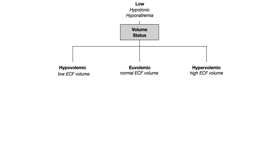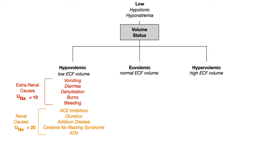Now we're looking at hypotonic hyponatremia by volume status. Starting on the left with hypovolemic — low extracellular fluid volume — there are many causes. Vomiting, diarrhea, dehydration, burns, and bleeding are all extra-renal causes of hypovolemic hypotonic hyponatremia, meaning causes that happen outside of the kidney.